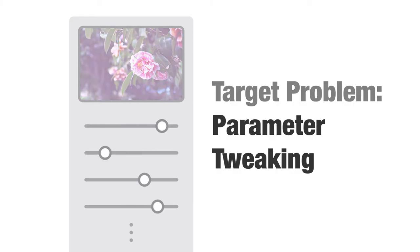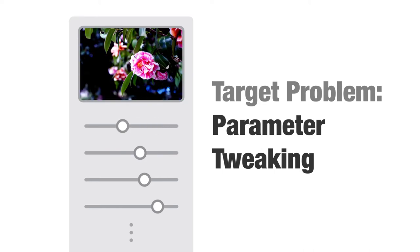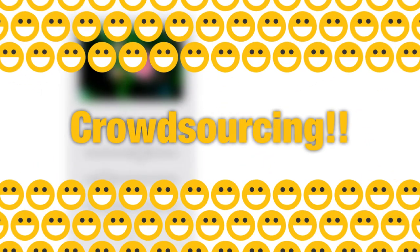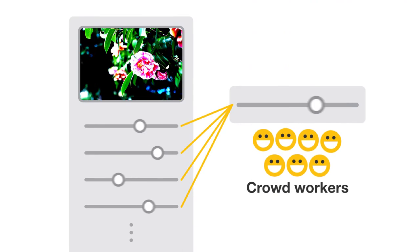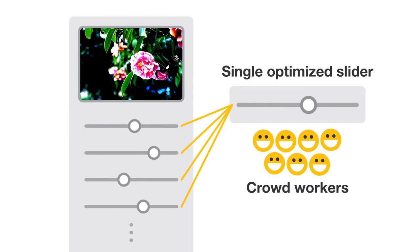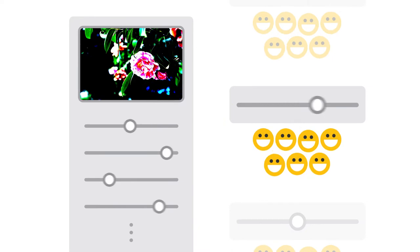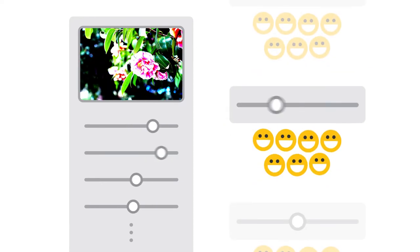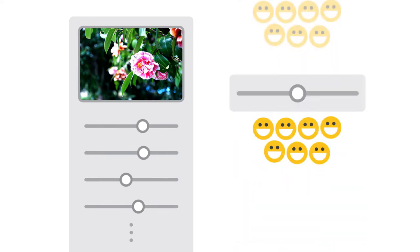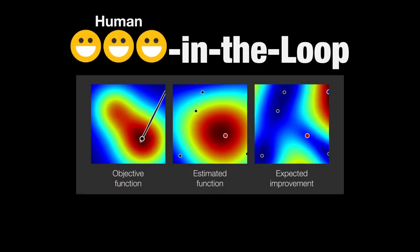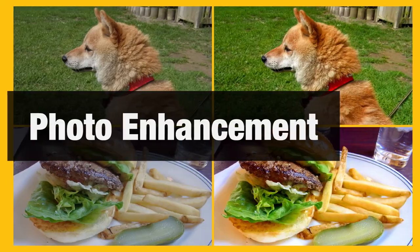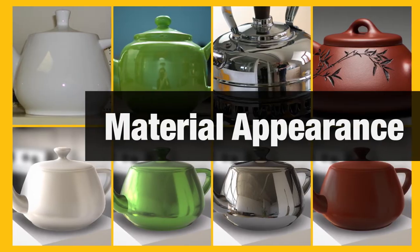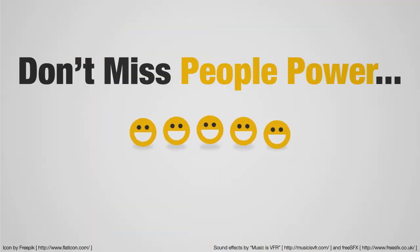We present a new method for parameter tweaking problems based on crowd sensing. The system asks crowd workers to adjust a single optimized slider and iterates this process to find a global optimum. To enable this human-in-the-loop algorithm, we extend Bayesian optimization techniques. It can be applied to various design scenarios. Thank you.